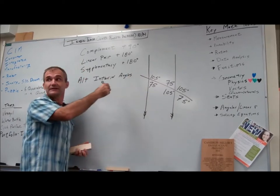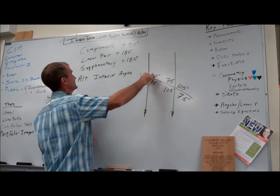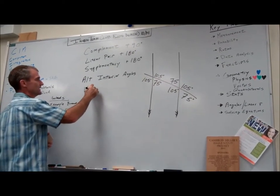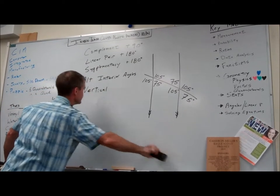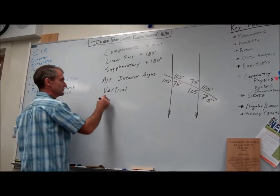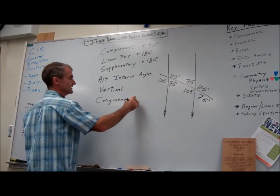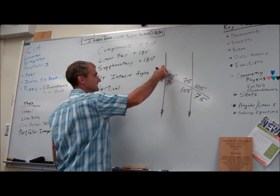This angle right here is 105 because it's a vertical angle of that. So vertical angles are congruent. So we have vertical angles are congruent. And then congruent means the same measure. And the notation for congruent is equal sign with a squiggle. And finally, this is 75 here.